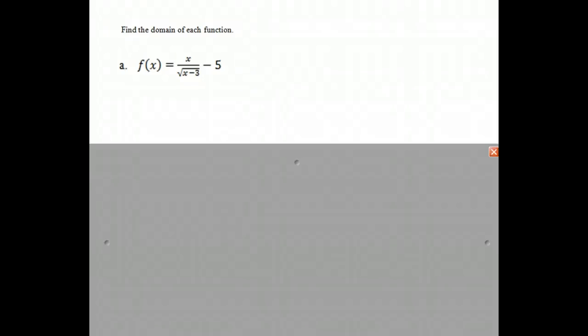Today we're going to find the domain of a function. In the example that you see here, we notice two things. One, we have a fraction, so there can't be a zero in the denominator. And we also have a square root, and you cannot have a negative number in the square root.